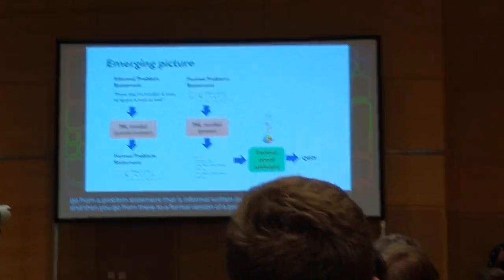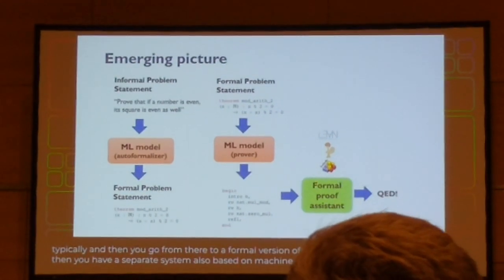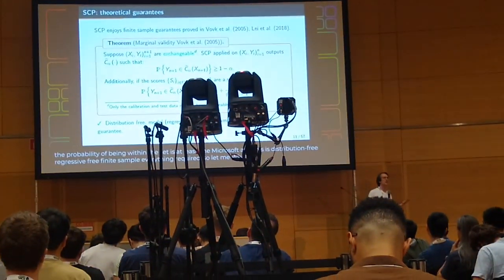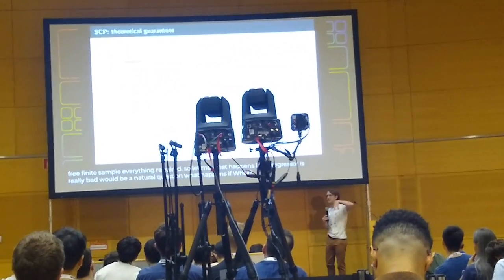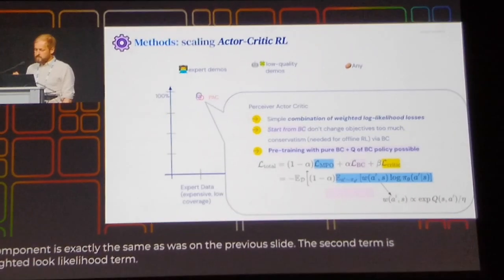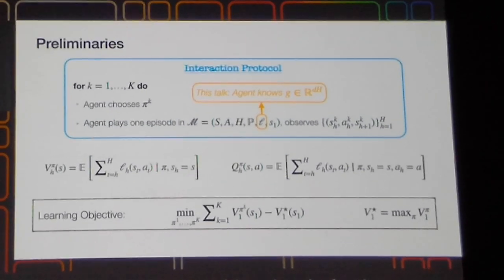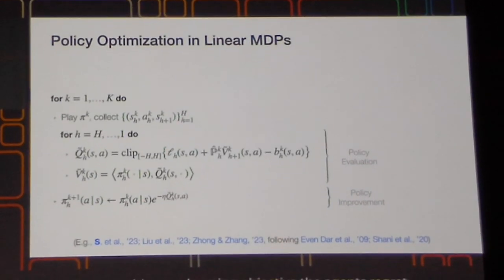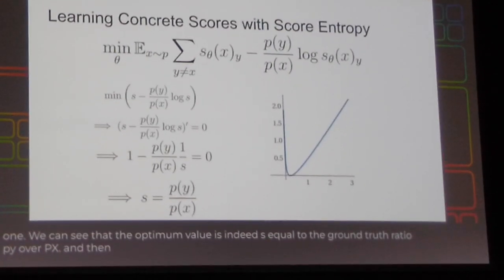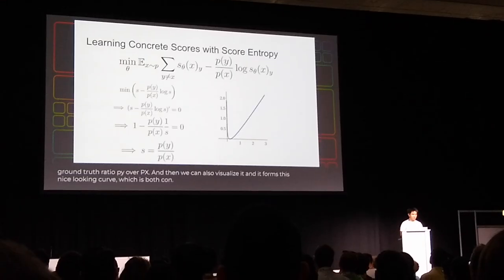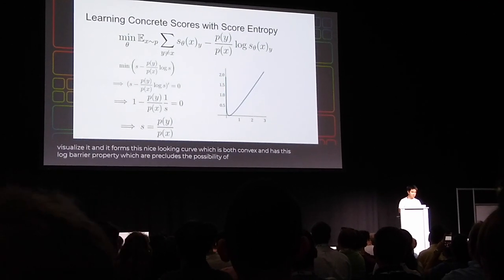It's my great honor to introduce the professor. What happens if my regression is really bad — what if the off-the-shelf estimator I got was actually very bad? The second term is a weighted log-likelihood term where we consider our actions and the agent's regret as a learning objective. At a high level, looking at policy optimization in the theoretical linear MDP setup, the optimal value is s equal to the ground truth ratio of p_y over p_x. We can visualize it as a convex curve with a log barrier property that precludes degenerate probability ratio estimation less than zero.